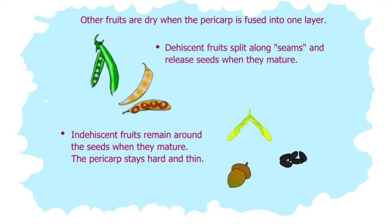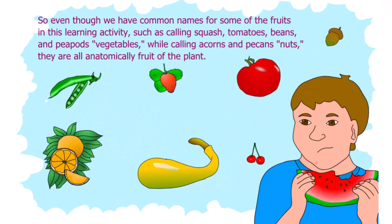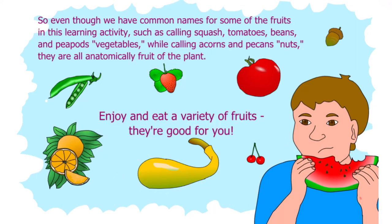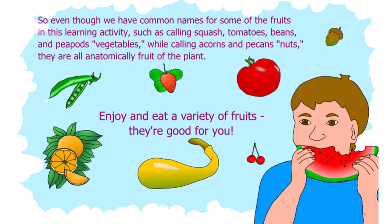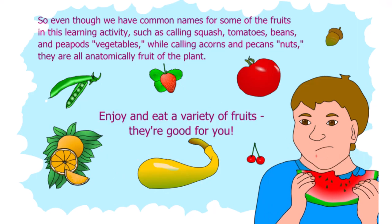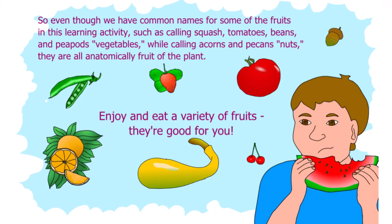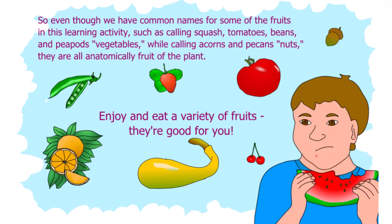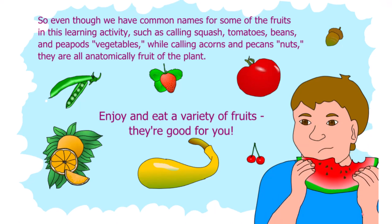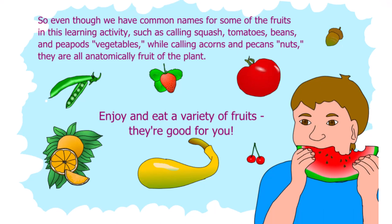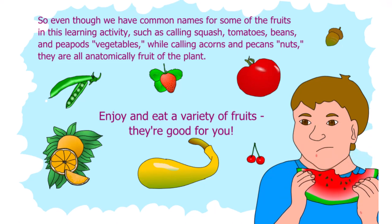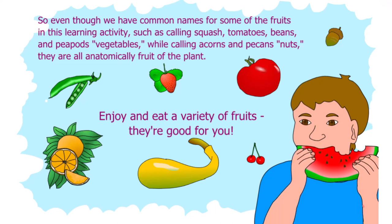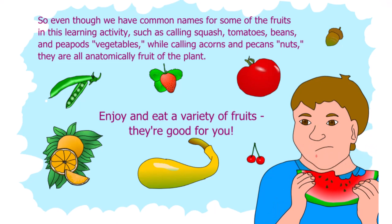So even though we have common names for some of the fruits in this learning activity — such as calling squash, tomatoes, beans, and pea pods vegetables, while calling acorns and pecans nuts — they are all anatomically fruit of the plant. Enjoy and eat a variety of fruits and vegetables. They are good for you.